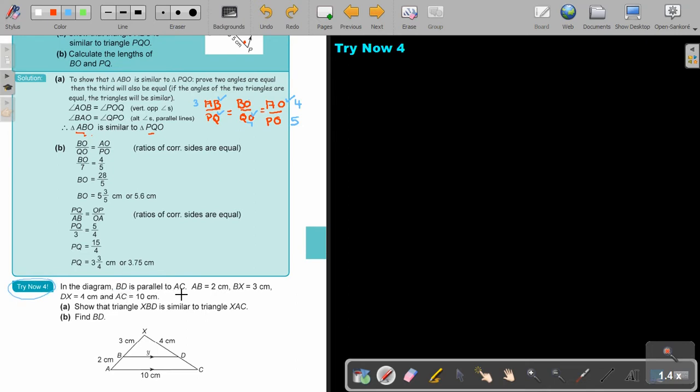In the diagram, BD is parallel to AC. And then they give you the different dimensions. Show that triangle is similar to that. Let's start. Do you see that those lines are parallel? This is the F, so this is corresponding angles. I can start by saying angle XBD is equal to angle XAC, corresponding angles.